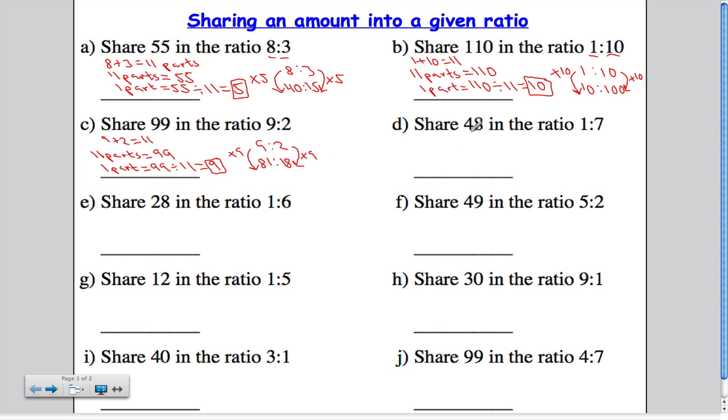Last one I'm going to do. 48 in a ratio 1 to 7. So again, step 1. Add these two numbers together. Work out the total number of parts. 1 plus 7 gives me 8. So I know that 8 parts must be equal to the total amount, 48.